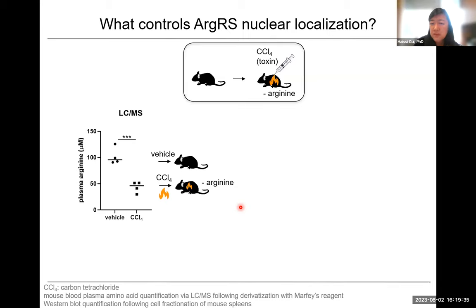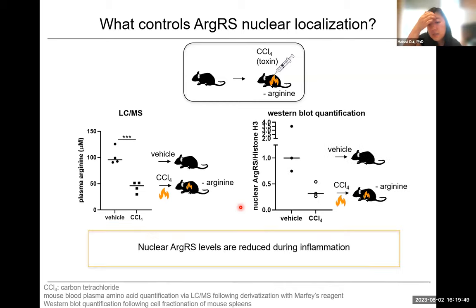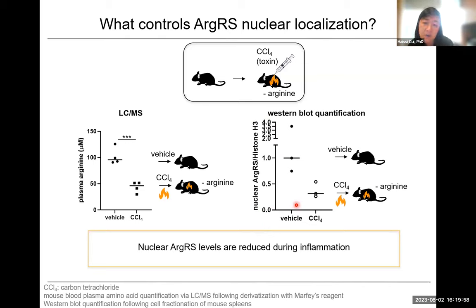We wondered what the consequences of this arginine drop are for aminoacyl-tRNA synthetases and specifically for arginyl-tRNA synthetase — is it able to respond to this fluctuation in arginine levels? We looked by Western blot at what happened to nuclear ArgRS, and found that indeed, upon systemic inflammation where we have this drop in arginine, we can also see a reduction in nuclear ArgRS, observable in the spleens of mice.